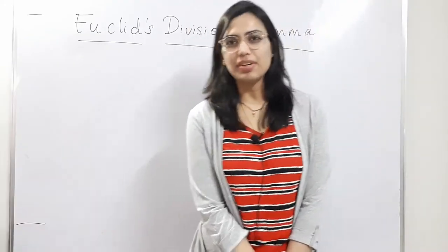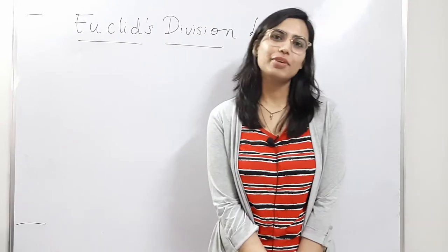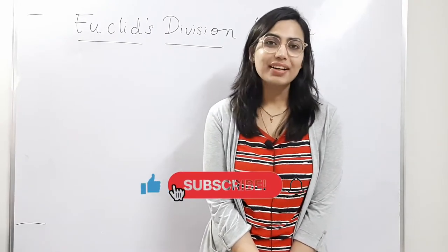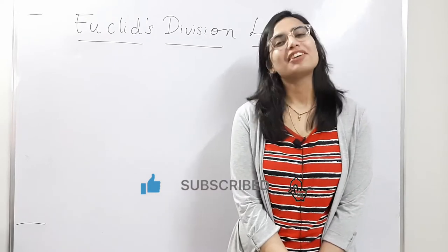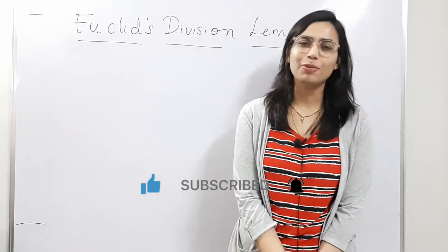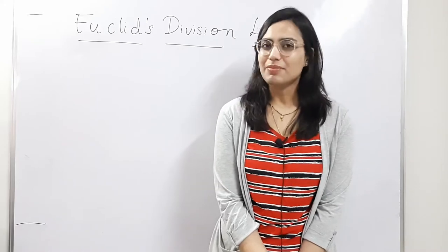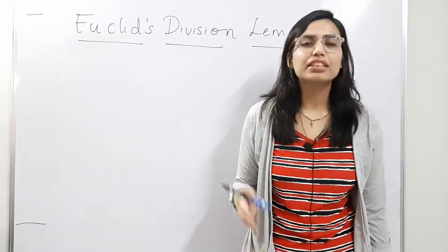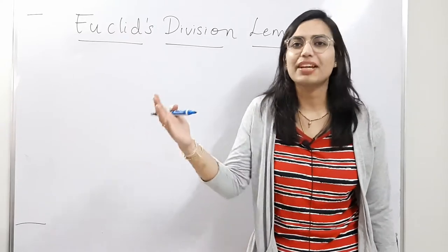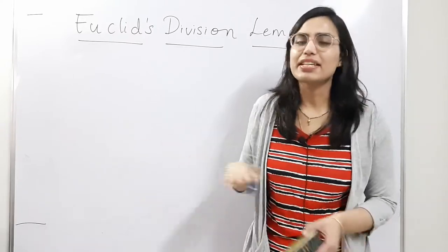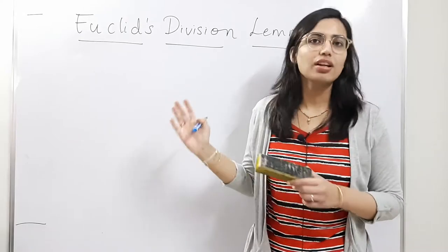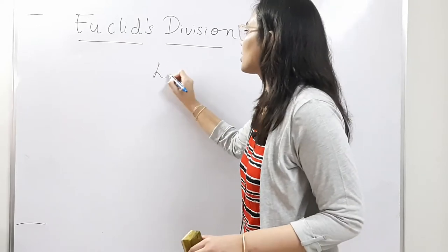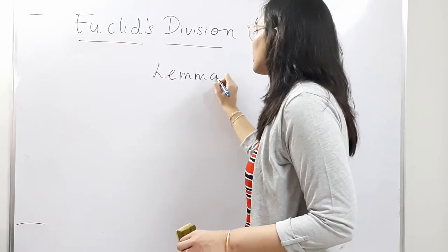Euclid's division lemma is a restatement of the long division process — it is nothing but a fancy name for the division that we usually do to solve problems. So whatever division method we use, the long division method we use to divide, say, 47 by 8, is the basic concept of Euclid's division lemma. But before that, you need to understand the difference between lemma and algorithm.